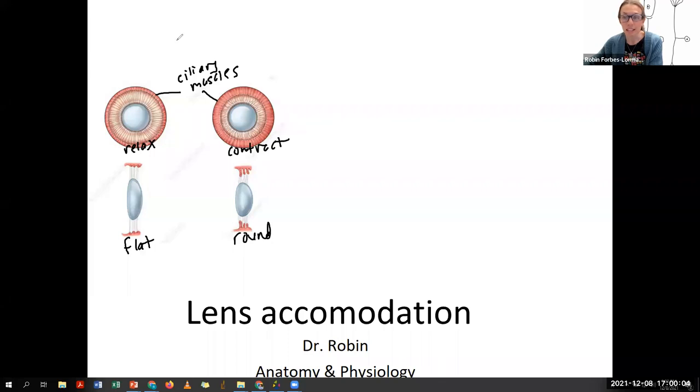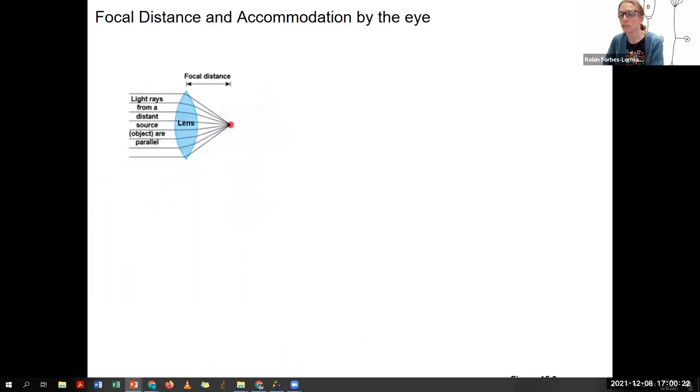So this contraction relaxation occurs based on where we're looking at objects, whether they are far or near, and they're going to be regulated by the oculomotor nerve, cranial nerve. So that's the basic idea of lens accommodation. We're going to look at a little bit of physics to understand why we need this to happen.